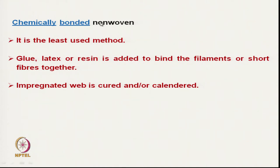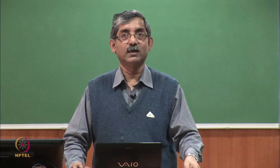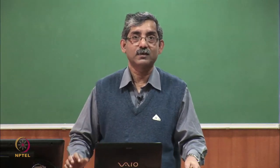The technique of manufacturing nonwoven fabric using continuous filaments is called spun bonding. It is used widely to produce geotextile directly from polymer. This process combines fiber spinning, web forming, web bonding, and finishing together — so all these processes together yield the fabric directly from the polymer. In spunbonding we can use both heat calendering or needle punching; if we use needle punching we get a more highly porous structure.